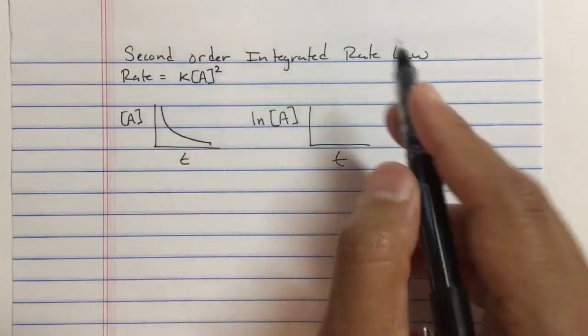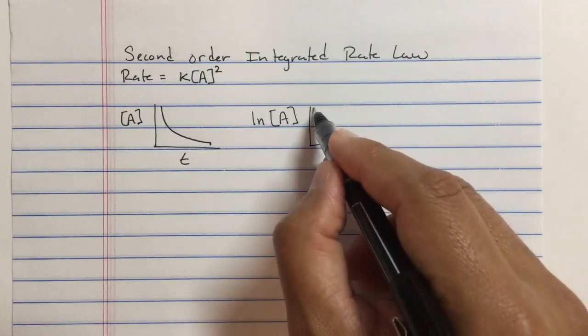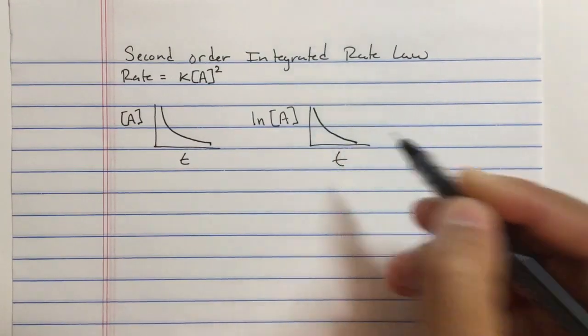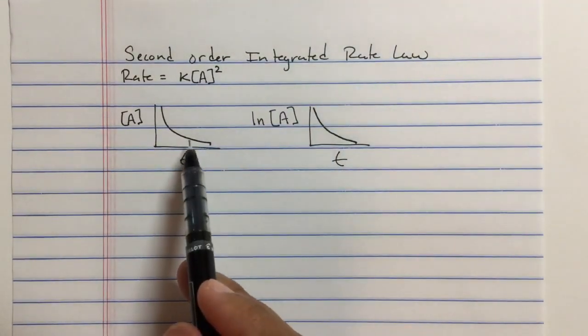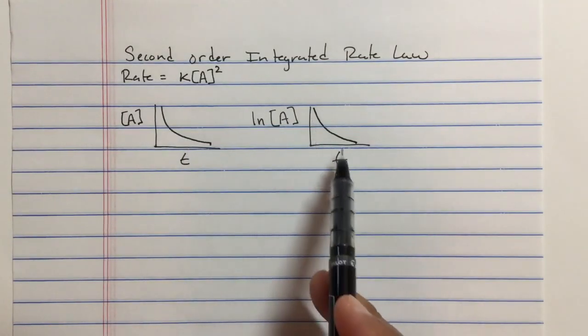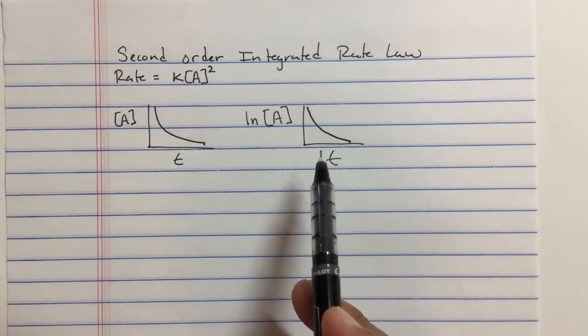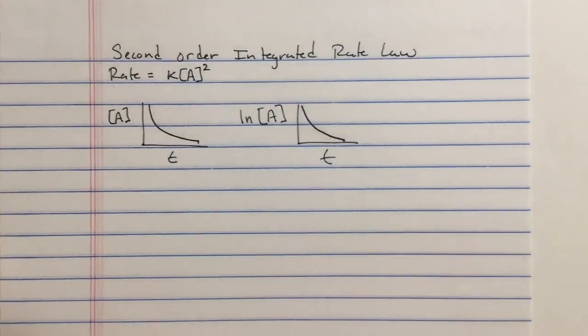But if the reaction is second order kinetics, the line starts to flatten out but it's not exactly a straight line. So this is not first order kinetics.